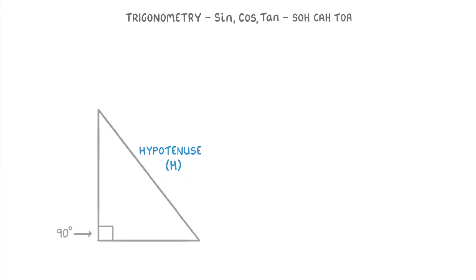Now how we label the other two sides changes depending on which angle we're interested in finding. For example, if we were interested in finding this angle in the bottom right, which we would label as X, then this side, which is opposite to X, would be called the opposite, which we represent with the letter O. And then this side next to our X angle, or in other words adjacent to it, would be called the adjacent, so we label it with the letter A.